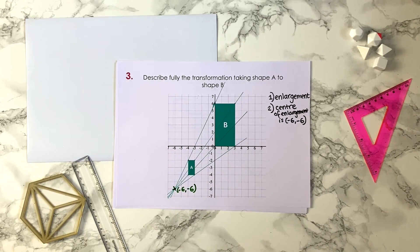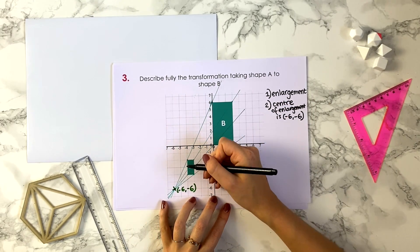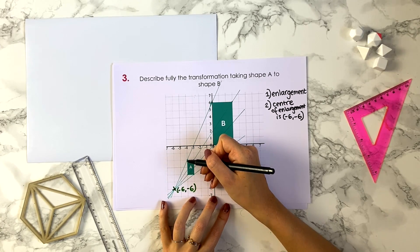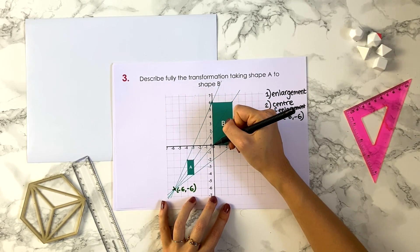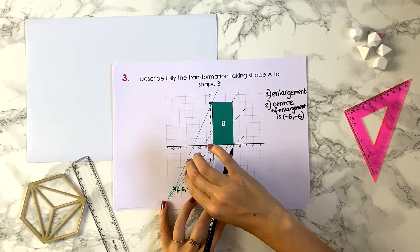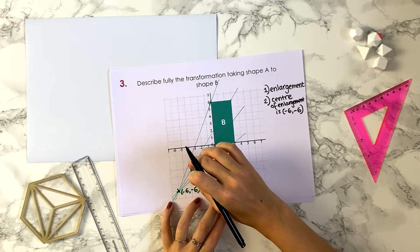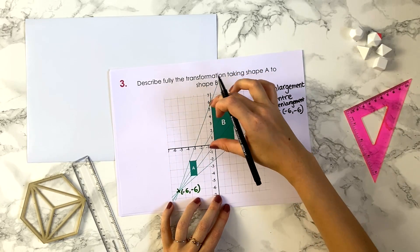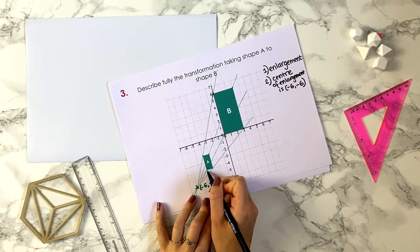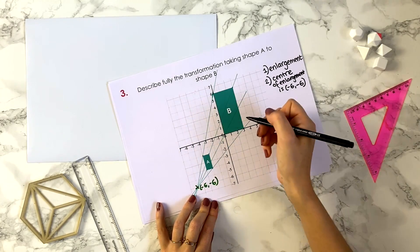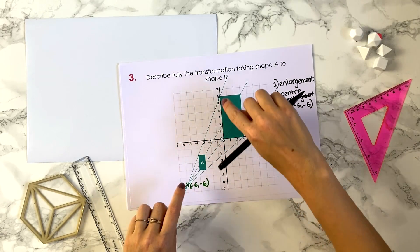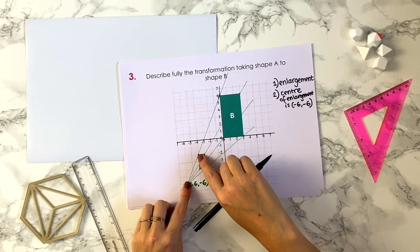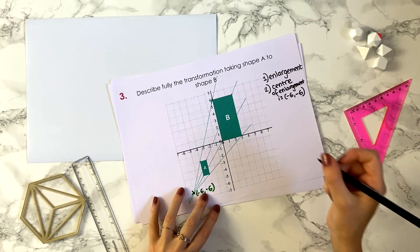Finally, we need to state the scale factor — how much the size has changed. We can look at a side of the original shape: this left-hand side has length 2. The corresponding side on shape B has length 1, 2, 3, 4, 5, 6 — so it's gone from 2 to 6, which is multiplying by 3. So the scale factor is 3. We can double-check with another length: this bottom side has length 1 on shape A and length 3 on shape B — again multiplied by 3. You can also measure distances from the centre of enlargement and confirm they are three times as large.